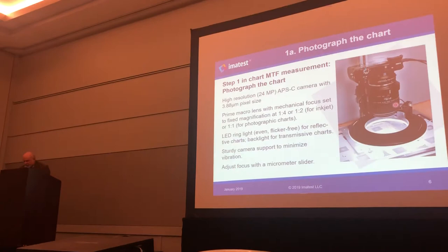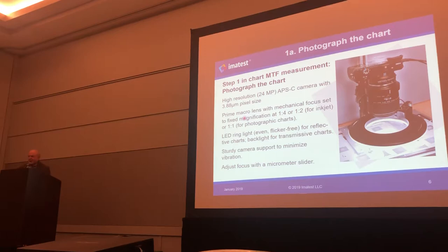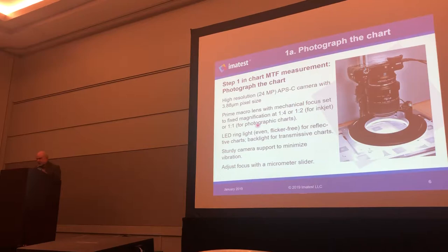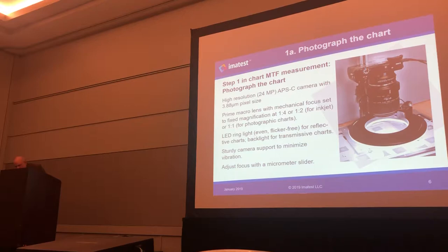For step one, we have a little rig for characterizing the chart. Right now we're using a high-resolution APS-C camera with fairly small pixels, a prime macro lens with mechanical focus — that's pretty important because we want to maintain the magnification, just set it and forget it — either one-quarter or one-half magnification for inkjet charts. For finer charts like photographic charts, we probably want to go to one-to-one. We have a very sturdy support, and we use either an even backlight or a very nice LED ring light that is flicker-free. We adjust focus by moving the camera up and down with a micrometer; we do not touch the lens because we want to maintain constant magnification.